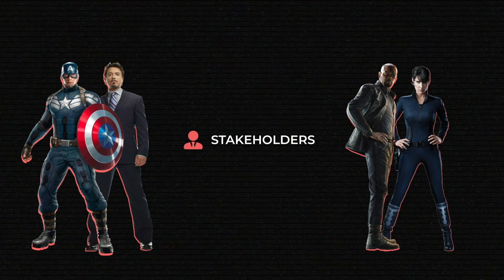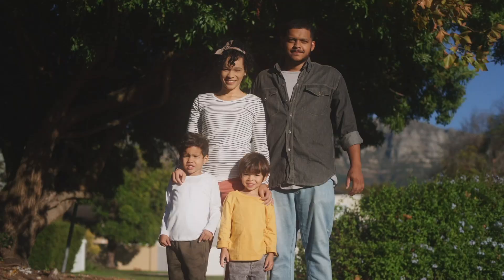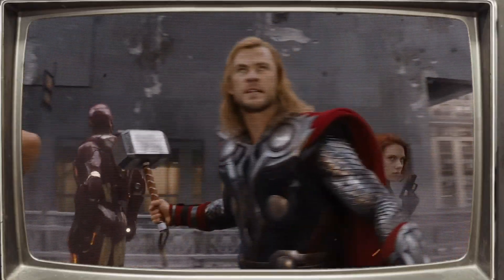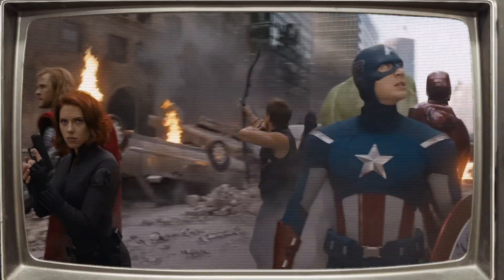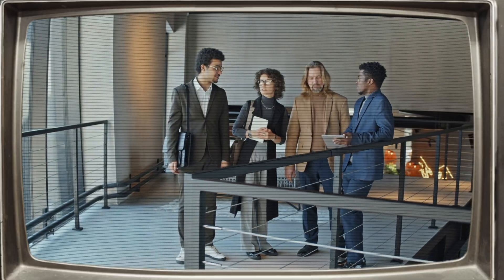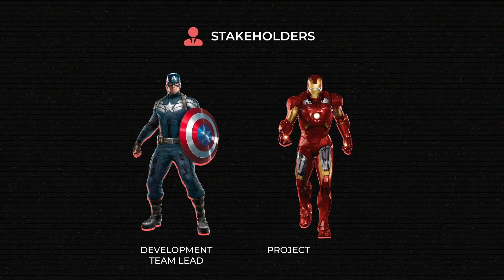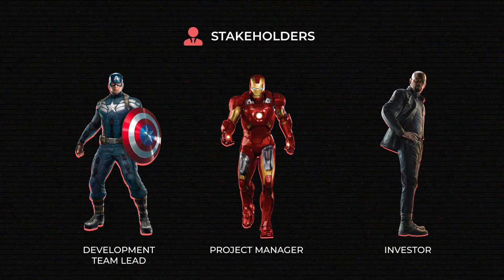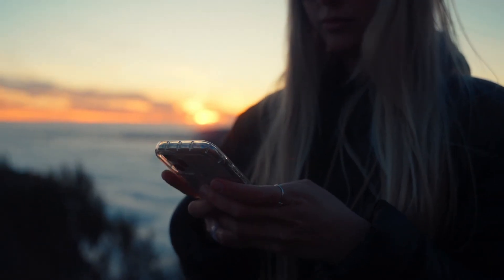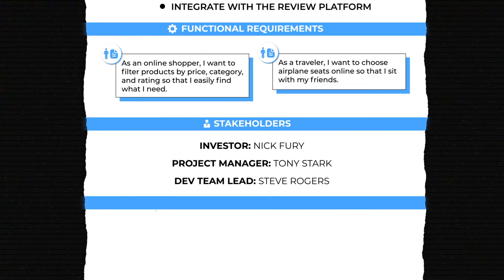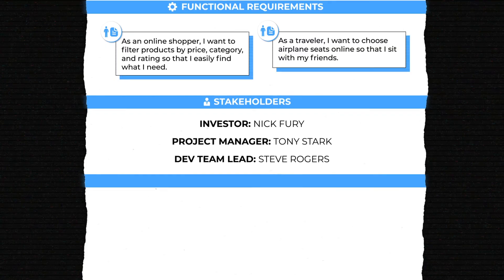Stakeholders are basically anyone who's affected by or can affect the project. For your house construction project, stakeholders will be your family members, the architect, the builders, your future neighbors, the local governing body that must give approval, and so on. In software projects, there are also many stakeholder groups with diverse interests. Some are actively involved, like development team members and the project manager. Others are less engaged — C-level managers or investors might not deal with the project daily but still have a big impact. End users are another stakeholder group with their own interest in the end product. As you list stakeholders in your BRD, specify their role in the project so everyone understands who is responsible for what.